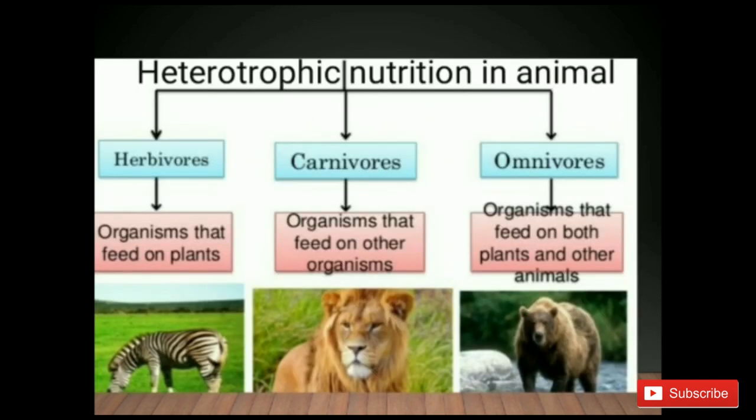Heterotrophic nutrition in animals is divided into three groups. First, herbivores — organisms that feed on plants. Second, carnivores — organisms that feed on other animals. Third, omnivores — organisms that feed on both plants and other animals.